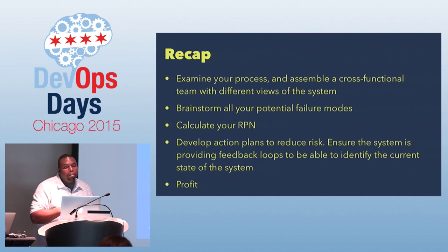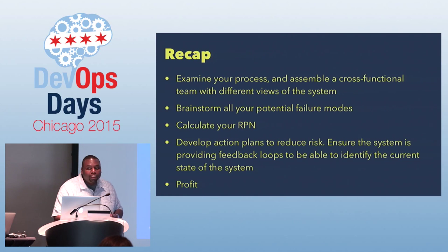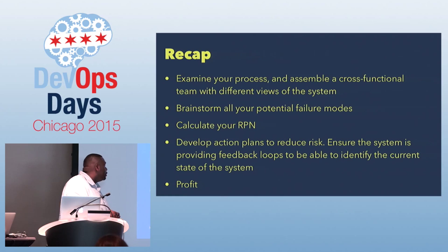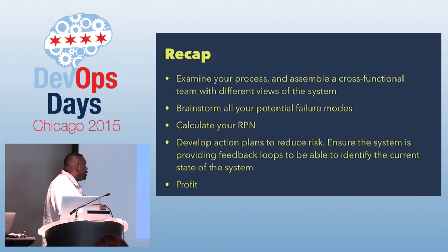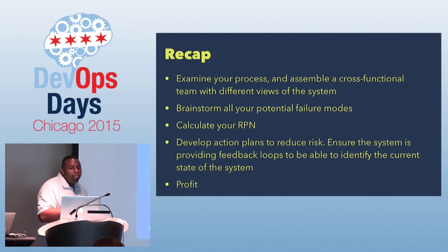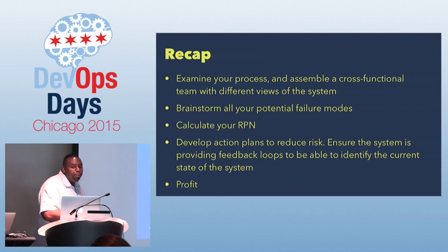A brief recap: examine your process, assemble cross-functional teams, brainstorm all your potential failure modes, calculate your RPN, develop action plans to reduce risk, and then profit.